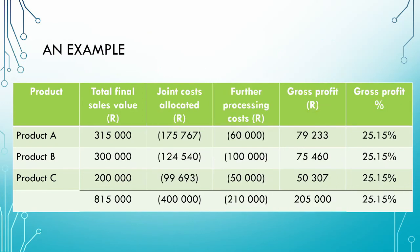This next slide is a quick proof that all the products and the joint process as a whole have the same gross profit percentage of 25.15 percent.